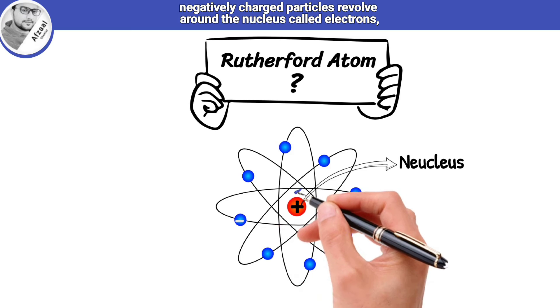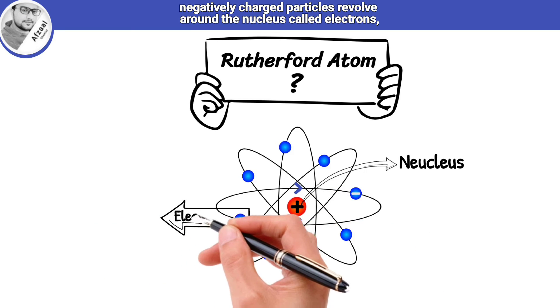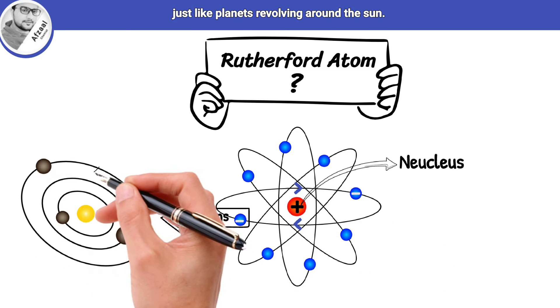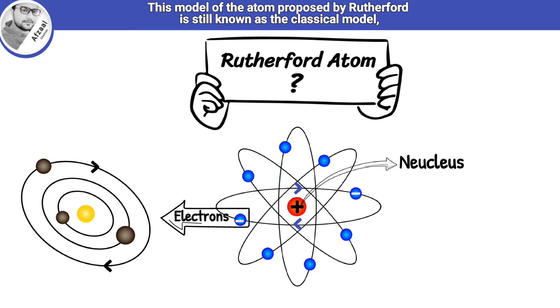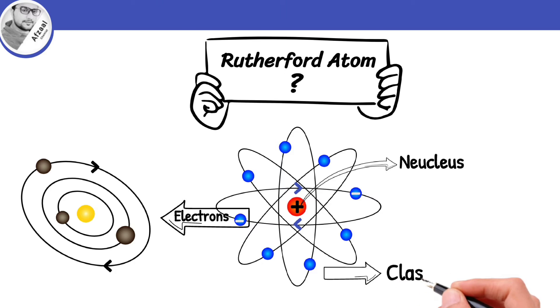Negatively charged particles revolve around the nucleus, called electrons, just like planets revolving around the sun. This model of the atom proposed by Rutherford is still known as the classical model, and was very much accepted at that time.